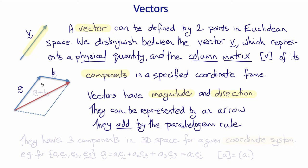So if this is vector a and this is vector b, the sum a plus b is this vector.